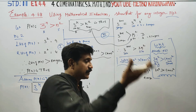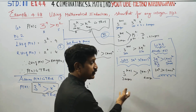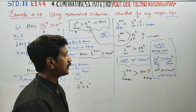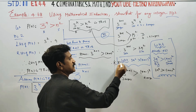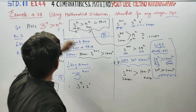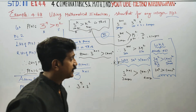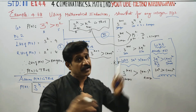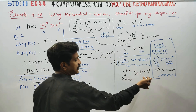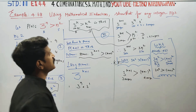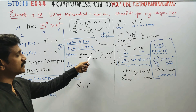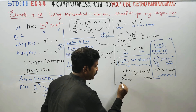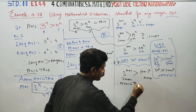Using the previous example's result, we come to the final conclusion: 3 power k plus 1 is greater than k plus 1 whole square. Therefore, P of k plus 1 is true — this is what we needed to prove.